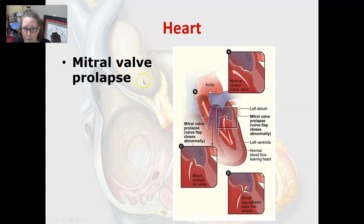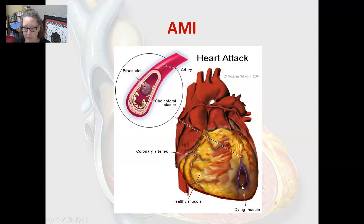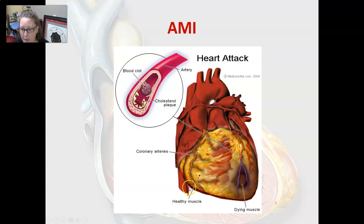Here is mitral valve prolapse illustrated. Normally the valves close completely as the ventricle contracts and blood goes into the artery, but with prolapse the valve gets loose, doesn't shut tightly, and blood can regurgitate back into the atrium. In an acute MI, anything downstream of a blockage lacks blood flow, causing dying muscle. We want to restore blood flow as soon as possible, as dying muscle turns to scar tissue, reduces contractility, and can eventually lead to congestive heart failure.